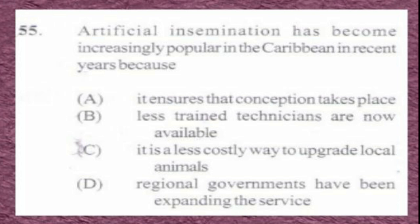Question number 55. Artificial insemination has become increasingly popular in the Caribbean in recent years because: A. It ensures that conception takes place, B. Less trained technicians are now available, C. It is a less costly way to upgrade local animals, D. Regional governments have been expanding the service. The answer is C, it is a less costly way to upgrade local animals.